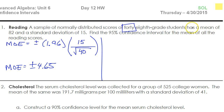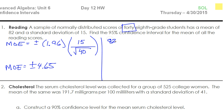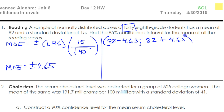We will add and subtract to find the confidence interval. The sample had a mean of 82, so that is what we're going to add to and subtract from. First, let's subtract: 82 minus 4.65. Then we'll do 82 plus 4.65, and that will give us our confidence interval.